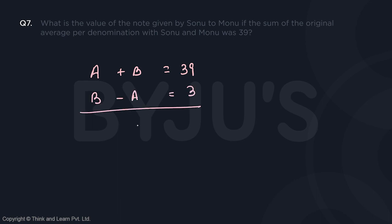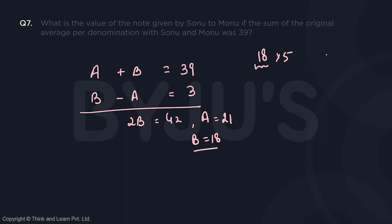From that, if I just solve it — adding the two equations — I get 2B equals 42. That means B is 21 and putting that in gives A equal to 18. So initially Sonu had an average of 18 with 5 notes and Monu had an average of 21 with 10 notes.